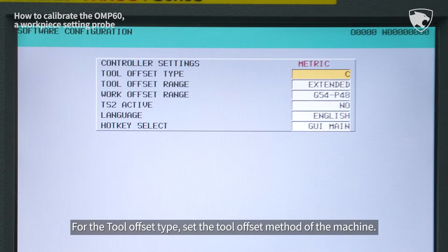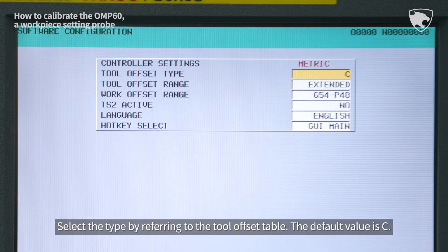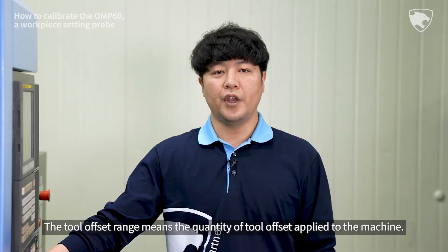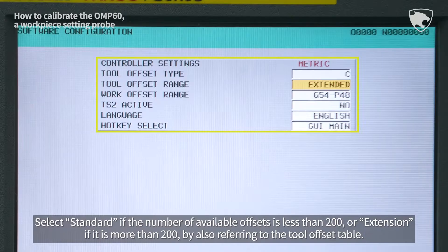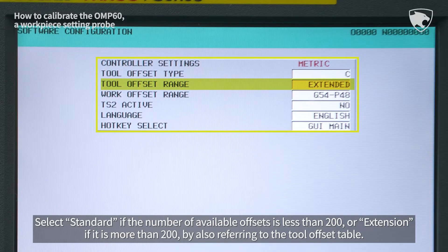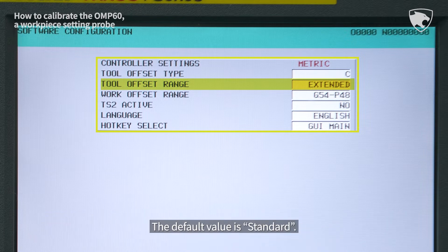For the tool offset type, set the tool offset method of the machine. Select the type by referring to the tool offset table. The default value is C. The tool offset range means the quantity of tool offset applied to the machine. Select Standard if the number of available offsets is less than 200, or Extension if it is more than 200. The default value is Standard.